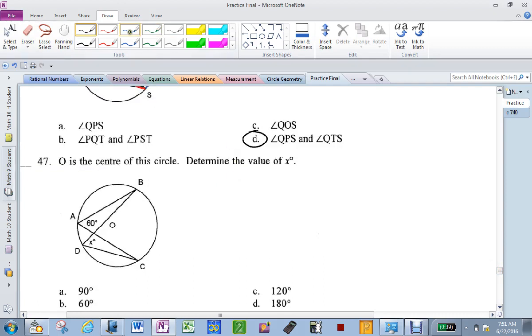Determine the value of x. Well, since that guy and that guy come from the same arc, x must be 60.